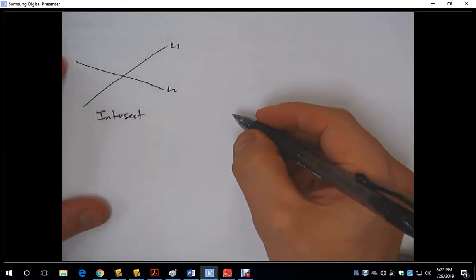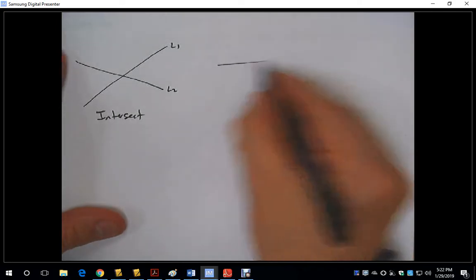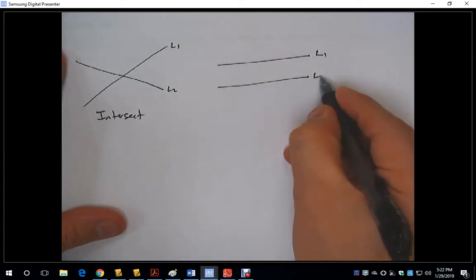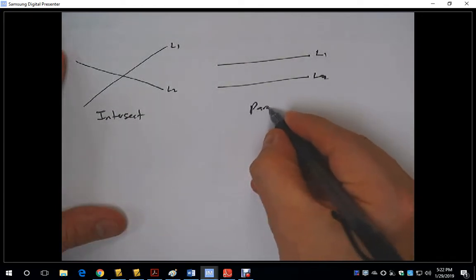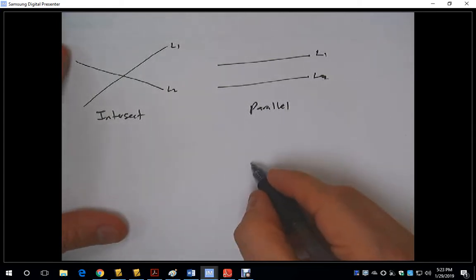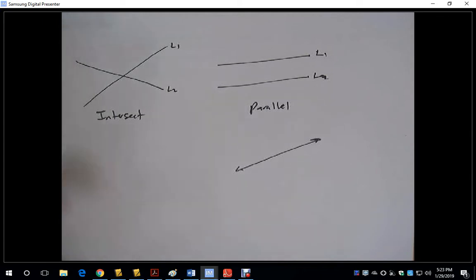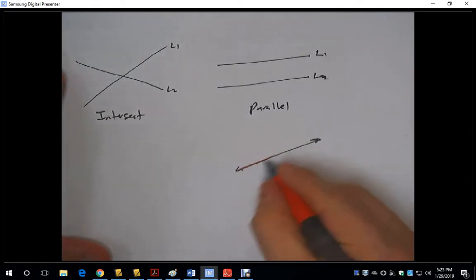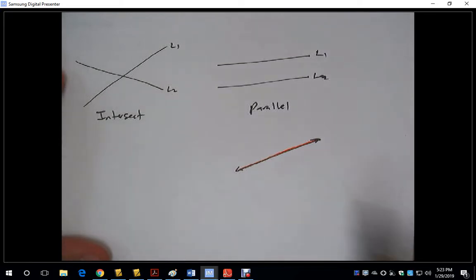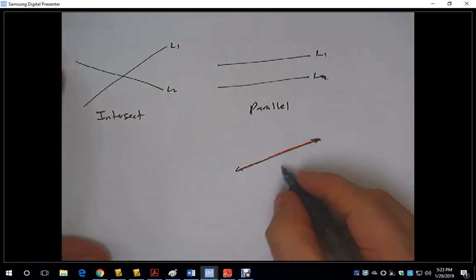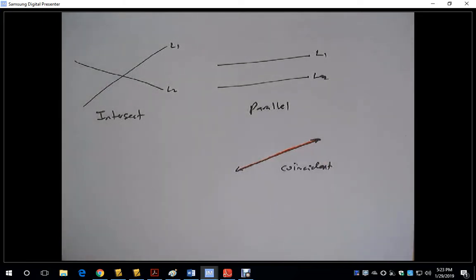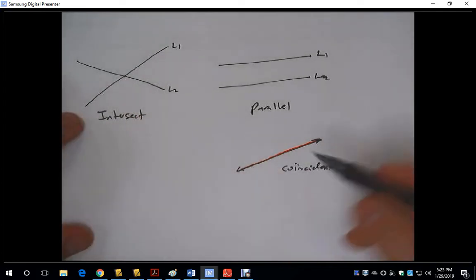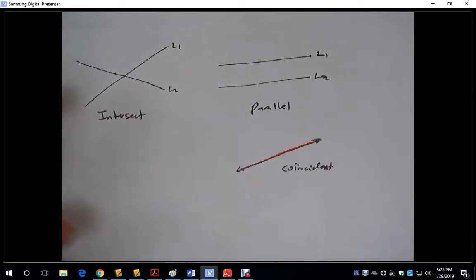Another possibility is that we have two lines that are parallel — this is L1 and this is L2. And then we can also have a third possibility: coincident. So we have this line here, and there's another line that lies right on top of it. With coincident lines, you have infinite solutions in common. If they intersect, you have one solution in common. With parallel, you have no solutions in common.